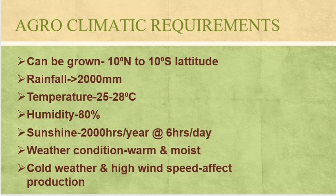Regarding climatic requirements, rubber can be grown between 10 degrees north and 10 degrees south latitude. Rainfall requirement is more than 2000 mm. Temperature should be 25 to 28 degrees Celsius and relative humidity is 80%. It requires sunshine of 2000 hours per year, which is about 6 hours per day. Warm and moist weather conditions are suitable for rubber trees, while cold weather and high wind speed adversely affect production.